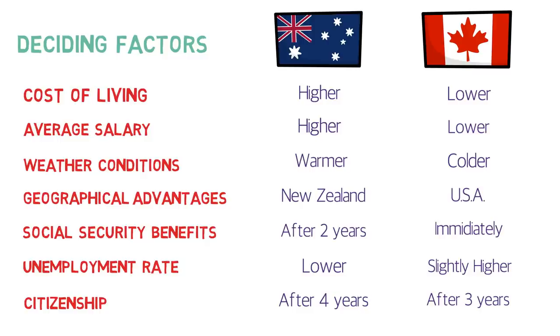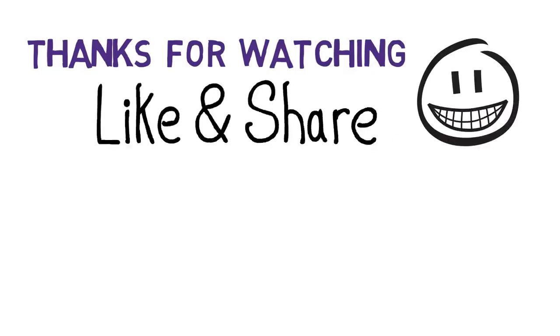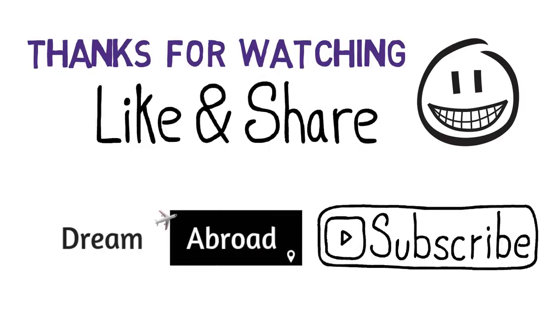Those were the main factors to help you decide whether to immigrate to Canada or Australia. I'd still insist you consider the immigration process first. Both are great countries offering huge benefits to permanent residents, with more similarities than differences. If you found this video helpful, please click like, share it with friends, and subscribe to the channel if you haven't already.